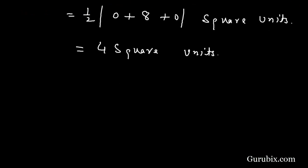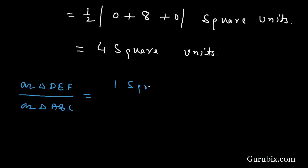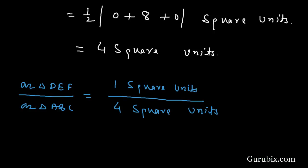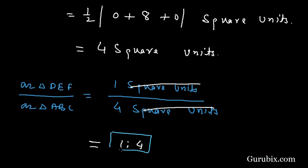Now we find the ratio of the area of triangle DEF to the area of triangle ABC: 1 square unit / 4 square units = 1 : 4. This is our required solution. Thank you.